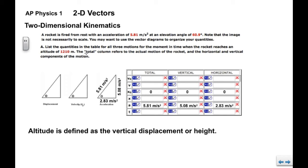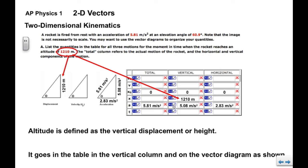We're also given the altitude, we want to know what the kinematics are when the rocket reaches an altitude of 1210 meters. Now, the altitude is defined as the vertical displacement or the height, so we're going to put that in two places. It's going to go into the final position in the vertical column. It's 1210 meters up, so it also goes on the vertical displacement diagram.